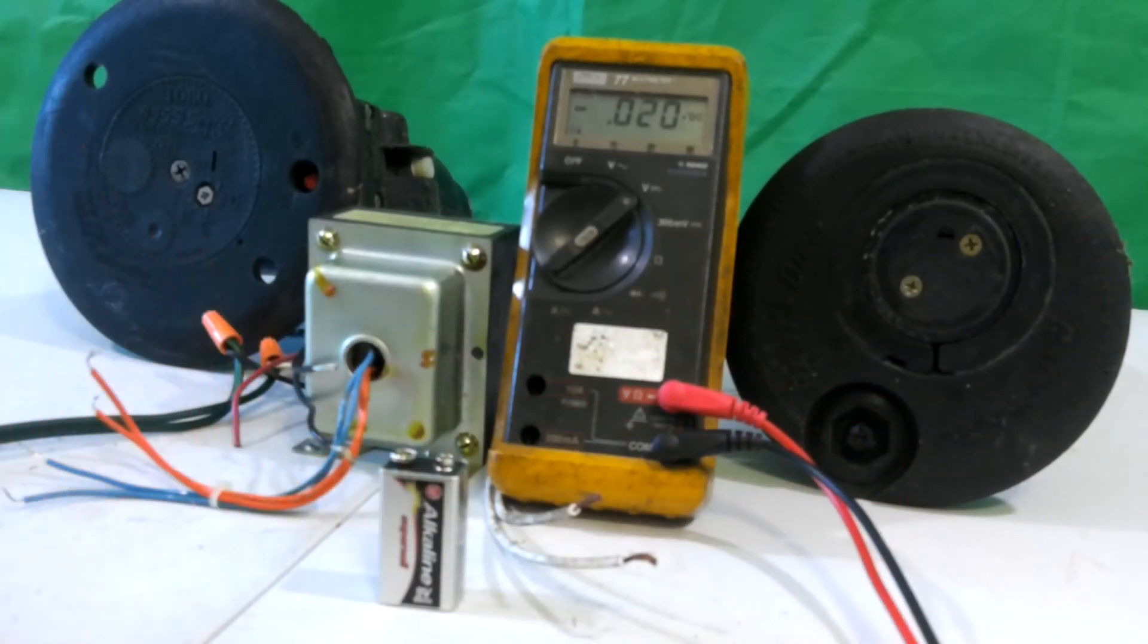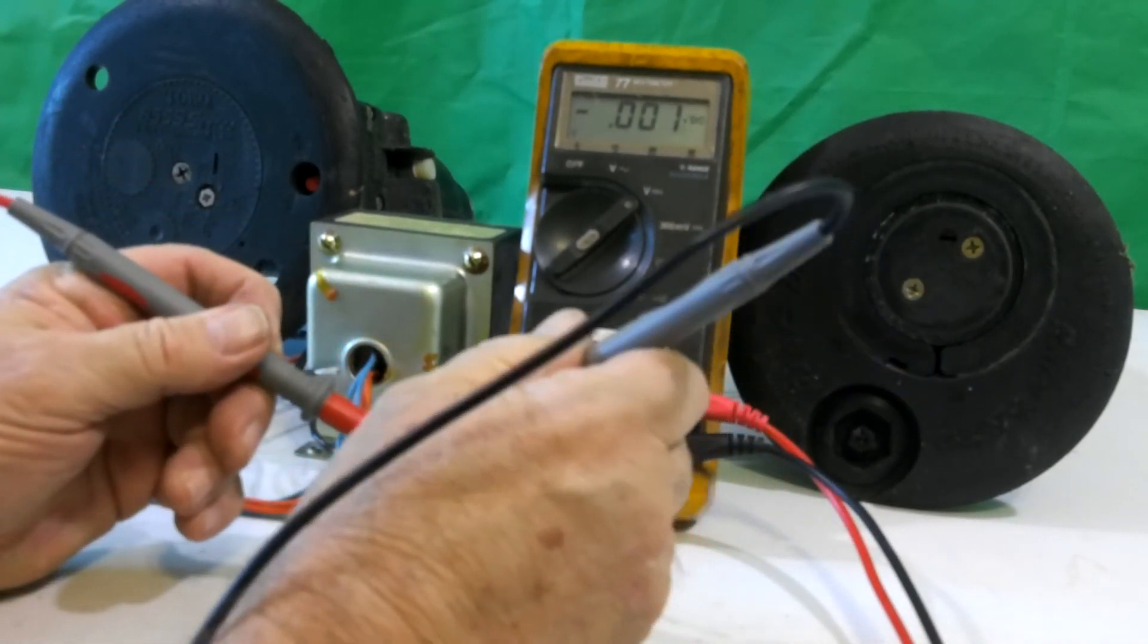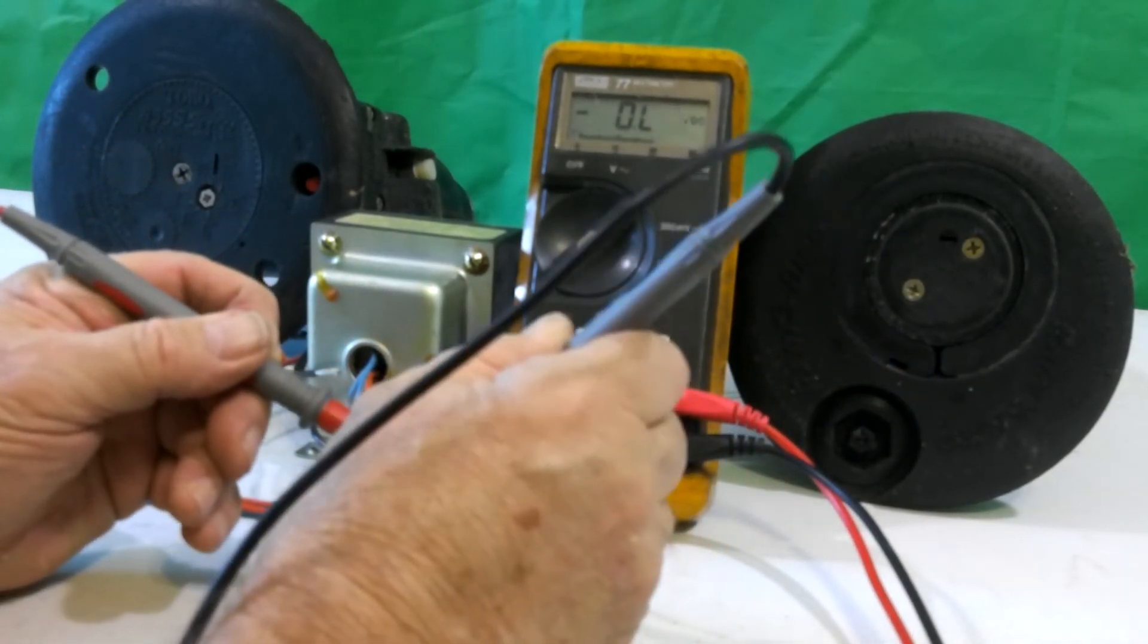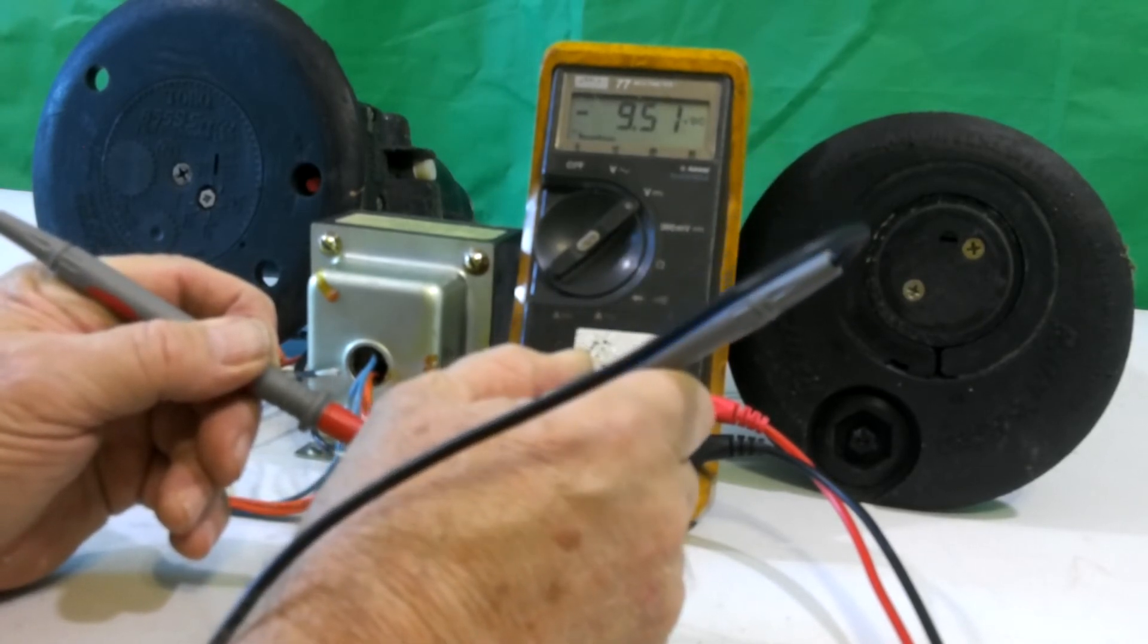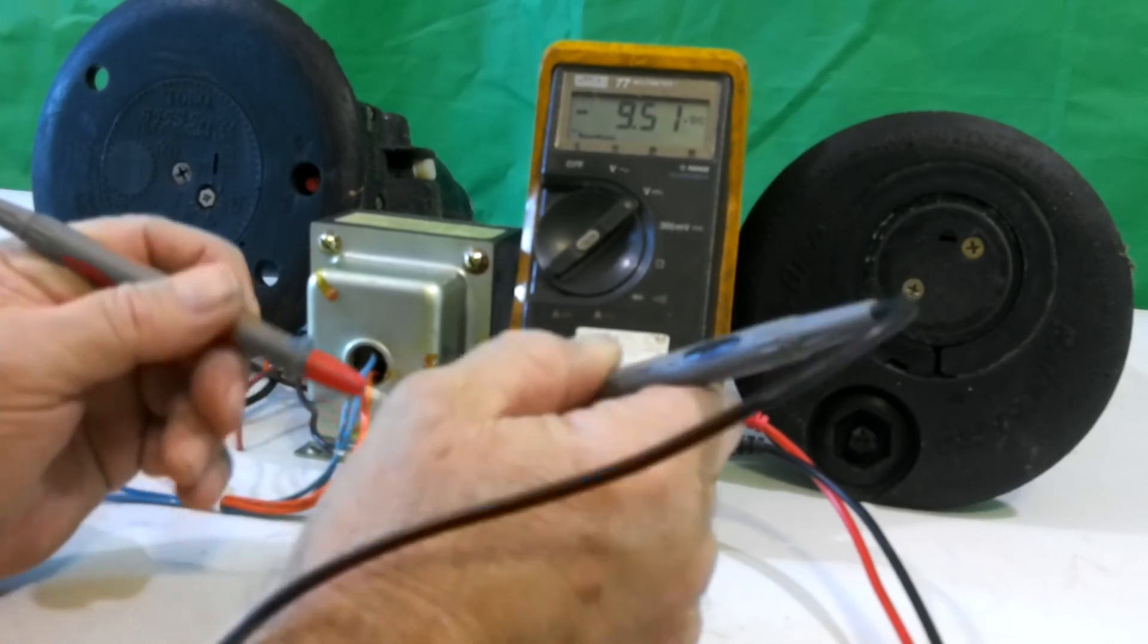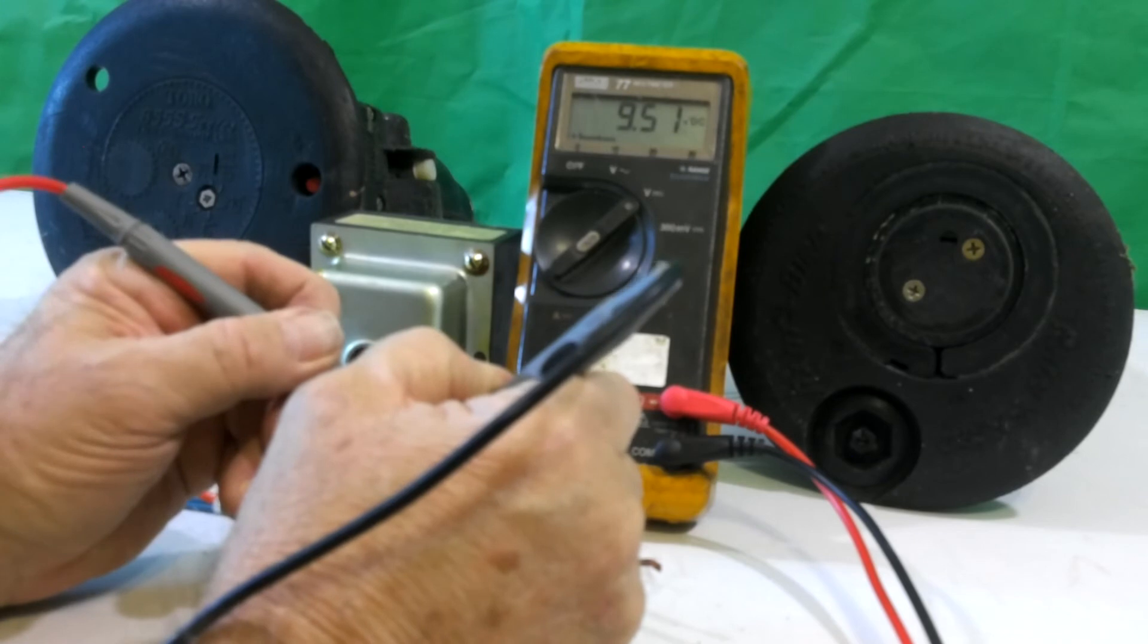If I happen to reverse those probes so that I'm one on my positive on negative, negative on positive, it'll show me the voltage, but it'll show me the negative voltage. It also indicates that the unit is good. But it should be this way, so you're looking at positive voltage.